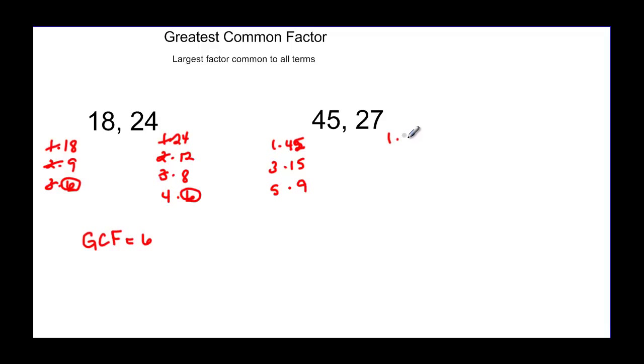27 would be 1 times 27, and 2 doesn't, but 3 does. 3 times 9, and then it's going to be 9 times 3. So this only has 4 factors. 45 has 6 different factors, and we look for the greatest common one. It looks like the greatest one they have in common would be 9. They all have 1, 3, and 9, but then there's just 27 left here, which is not a factor of 45. So the greatest common factor is going to be 9.